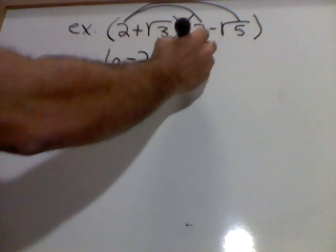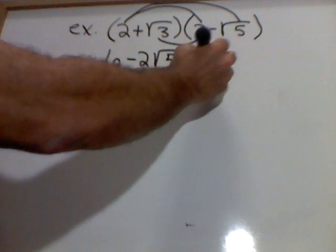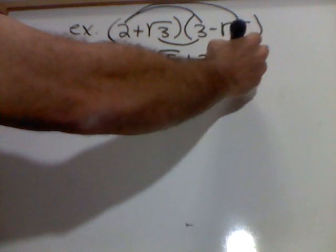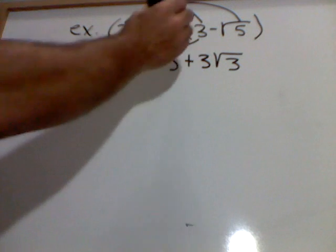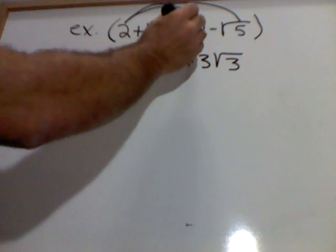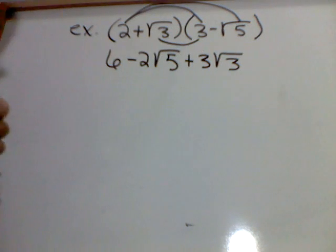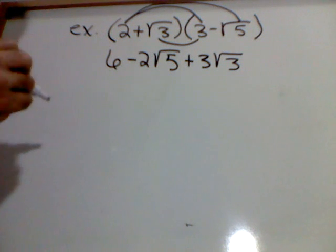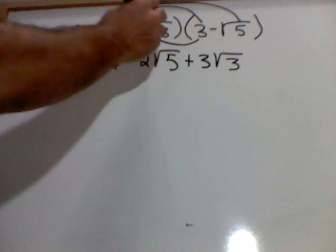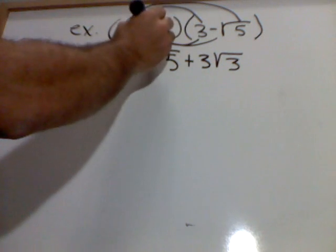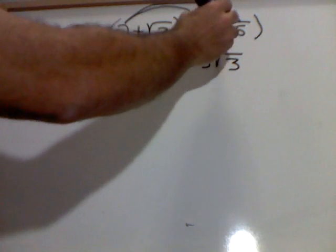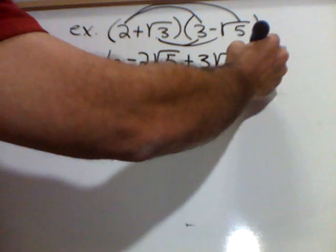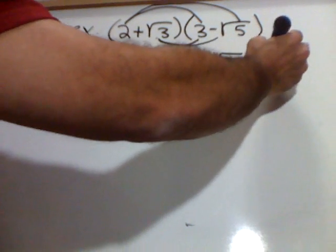Square root of 3 times 3 is just 3 square root of 3's. Remember, don't get the numbers outside under a radical with those numbers. If it's outside, it stays outside. If it's inside, it stays inside. And then finally, square root of 3 times a negative square root of 5 gives me a negative square root of 15.